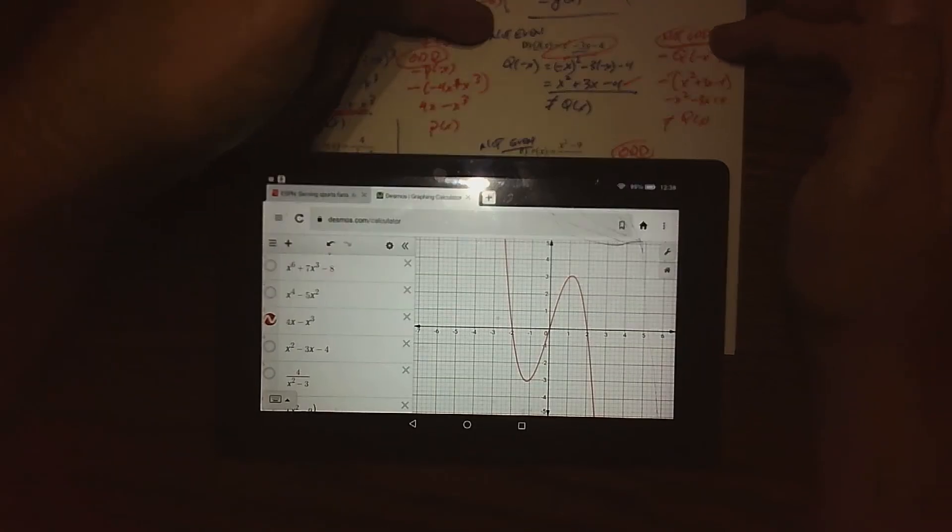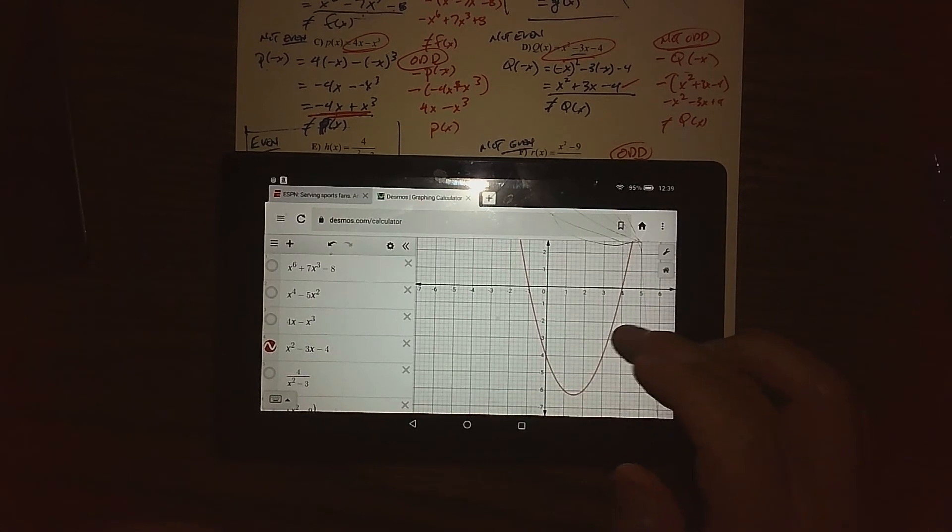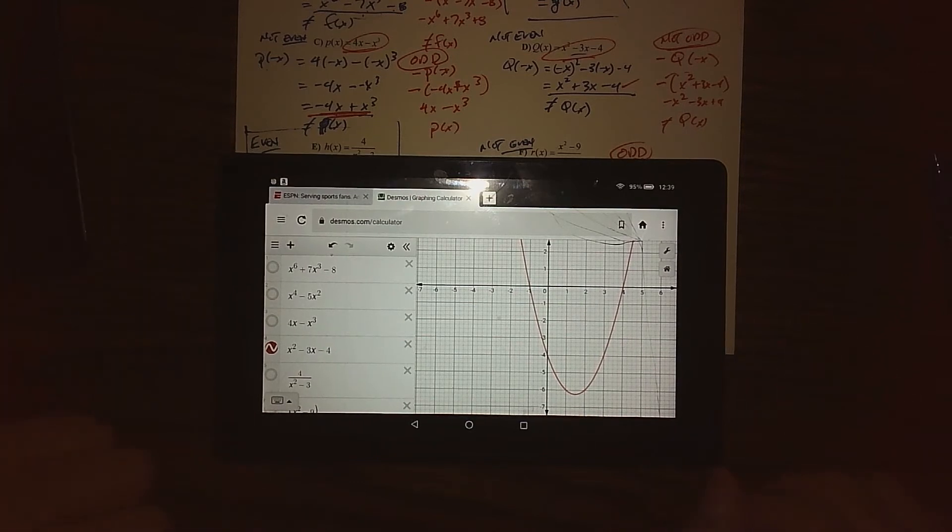The next graph, that parabola, was neither even or odd. So when I graph that parabola we can see it's definitely not symmetric with the origin and not symmetric with the y-axis. Again, our algebra test validated that.